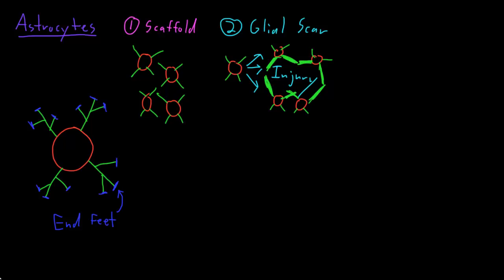This whole process of astrocytes reacting to injury has multiple names. It's called gliosis, or astrogliosis, or astrocytosis, or reactive astrocytosis. The actual scar tissue that's produced is called the glial scar.